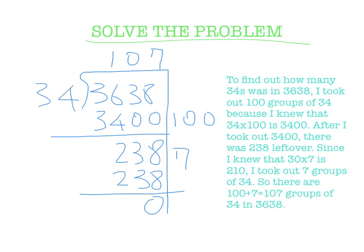I used partial quotients to solve this problem. To find out how many 34s was in 3638, I took out 100 groups of 34 because I knew that 34 times 100 is 3400. After I took out 3400, there was 238 left over. Since I knew that 30 times 7 was 210, I took out 7 groups of 34.